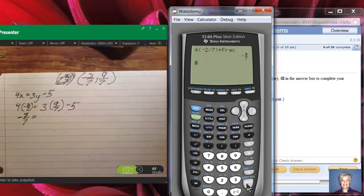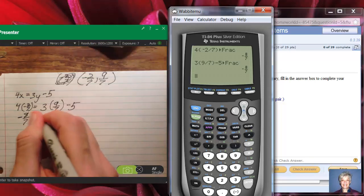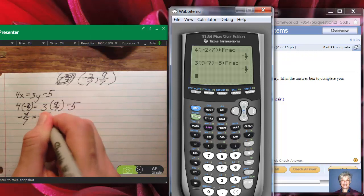Is that going to equal all this stuff over on the right? Let's see. I sure do hope it does. 3, parentheses, 9 divided by 7, parentheses closed, minus 5, math, frac, enter. I get negative 8/7. So it works in the first equation.